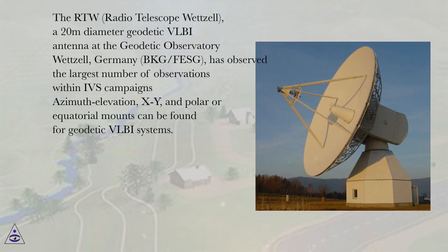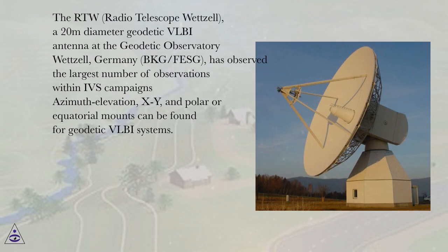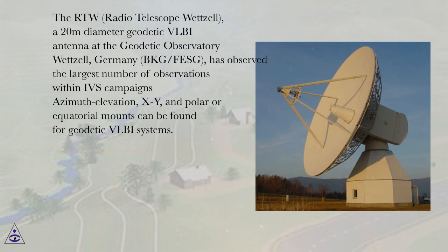The RTW — Radio Telescope Wetzel — is a 20-meter diameter geodetic VLBI antenna at the Geodetic Observatory Wetzel, Germany (BKG/VESC), and has observed the largest number of observations within IVS campaigns. Azimuth-elevation, XY, and polar or equatorial mounts can be found for geodetic VLBI systems.